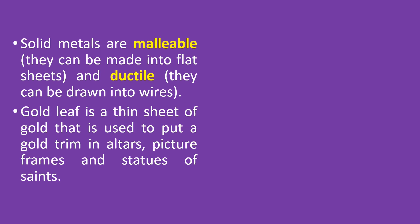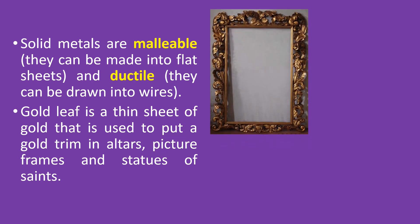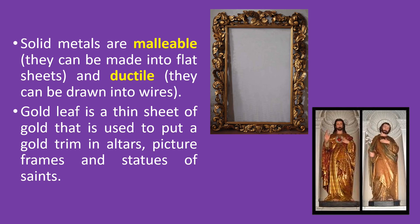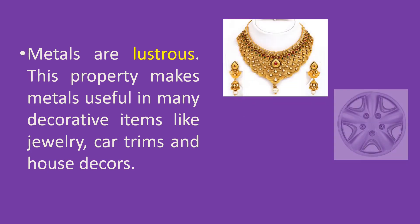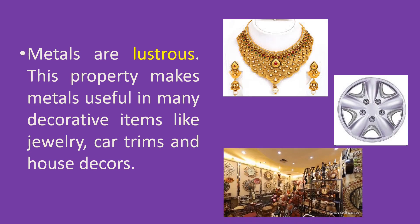Solid metals are malleable, meaning they can be made into flat sheets, or they can also be ductile, meaning they can be drawn into wires. Gold leaf is a thin sheet of gold that is used to put a gold trim in altars, picture frames, and statues of saints. Metals are also lustrous, and this property makes metals useful in many decorative items just like jewelry, car trims, and house decors.